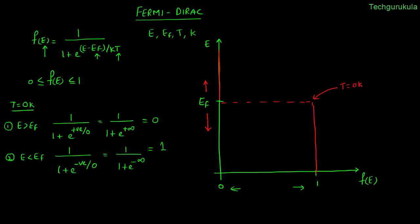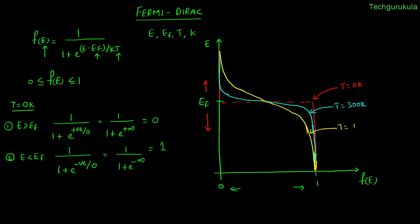For comparison, let me plot two more graphs: one for T = 300 Kelvin (room temperature) and another for a higher temperature T = T1 Kelvin, where 0 Kelvin < 300 Kelvin < T1 Kelvin.